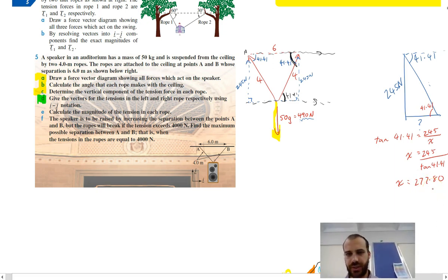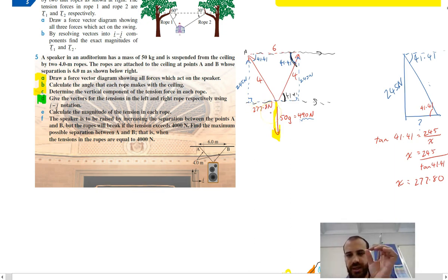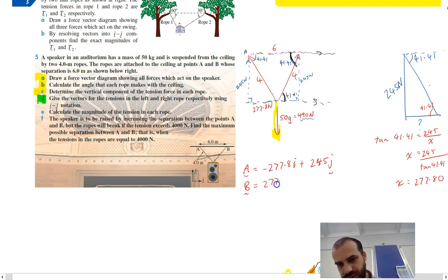Now be really, really careful here. 277.80 is the magnitude of the tension. So I can write, for instance, 277.8 newtons there. But be careful. Actually, tension is non-directional. So we can say the tension is 277.8 newtons. Now, if we're going to write our vectors, and we will now, so vector A is negative 277.8 in the I component and 245 in the J component, and vector B is going to be equal to positive 277.8 in the I component, 245 in the J component.